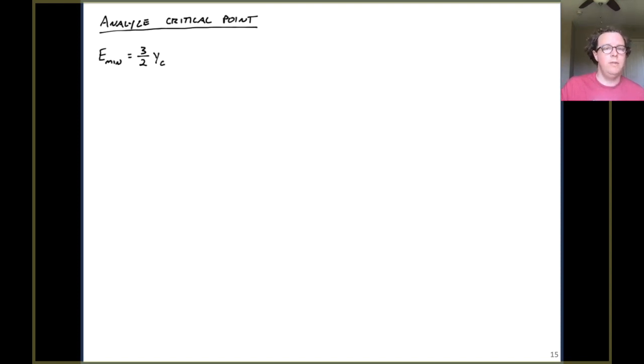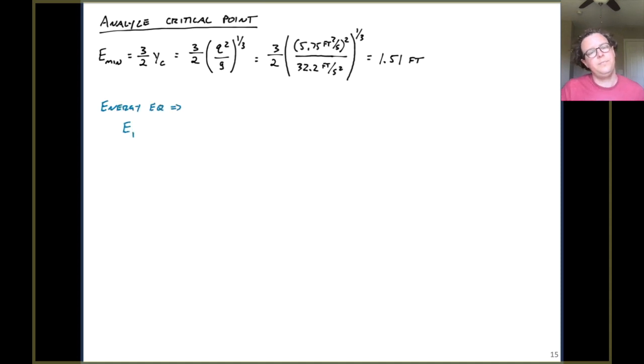And the answer is going to be to analyze the critical point. So we know that the specific energy at that critical point is three halves times the critical depth or three halves multiplied by our equation for critical depth. So we can go ahead and plug those numbers in. So I've got gravity down in the denominator now. I've got my specific discharge squared up in the numerator. All of that raised to the one-third power. And so the specific energy at the critical point is 1.51 feet. So consider our energy equation. That tells us that the specific energy plus the depth at one would have to equal the specific energy plus the bed elevation z at the critical point. So specific energy plus bed elevation is being conserved.